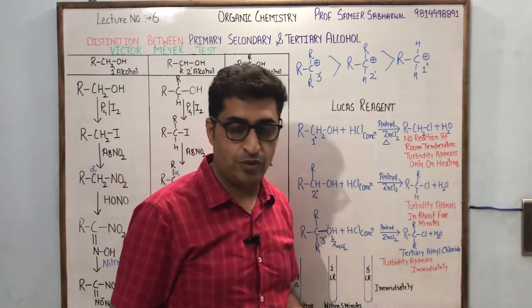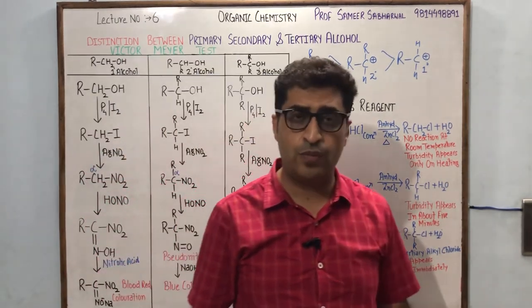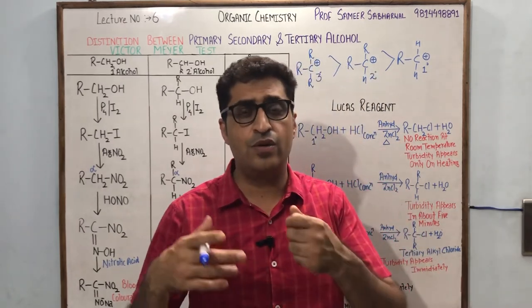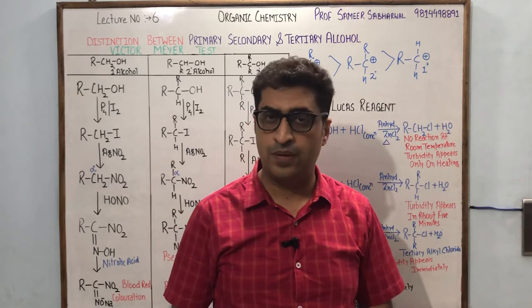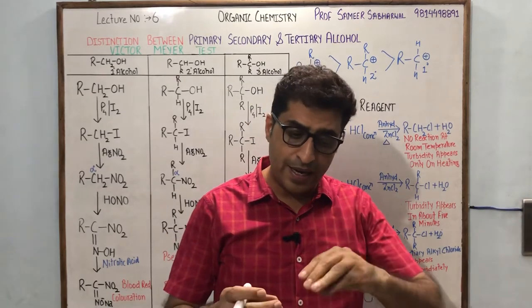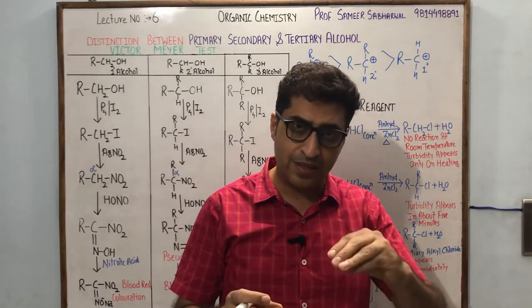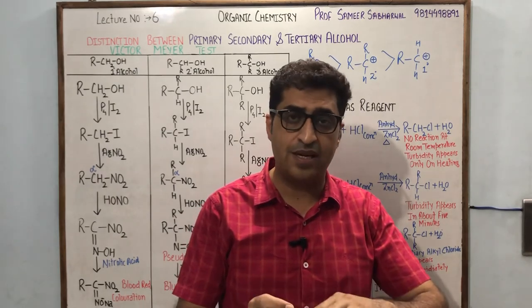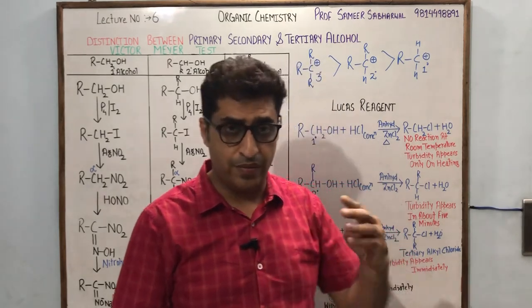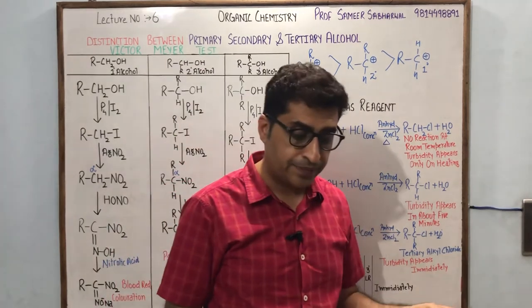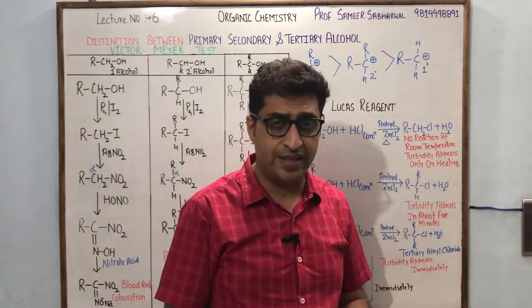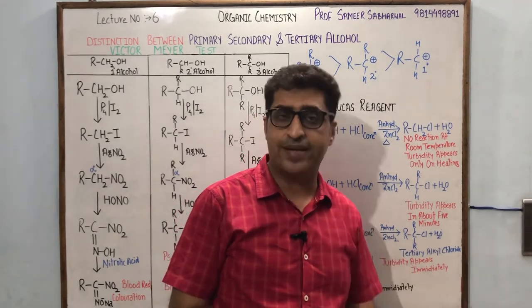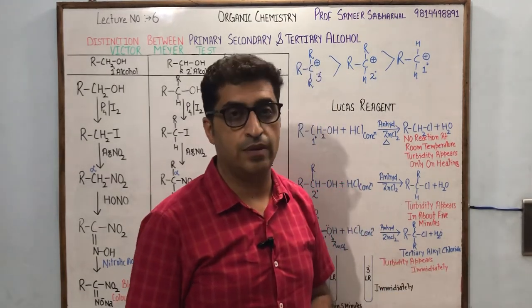Take three test tubes: put primary alcohol in the first, secondary alcohol in the second, and tertiary alcohol in the third. Add anhydrous zinc chloride and HCl — the Lucas reagent. The test tube in which turbidity appears immediately is tertiary alcohol.